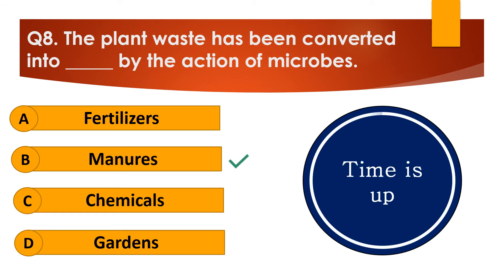Your time is up and the right answer is option B — Manures. The plant waste has been converted into manures by the action of microbes.